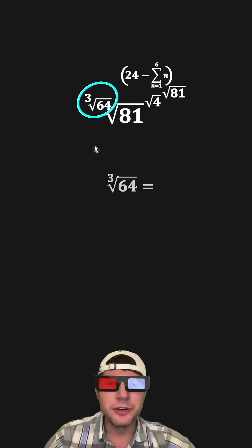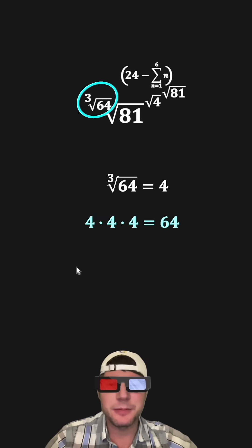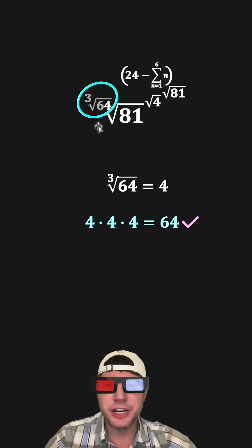Now we can do the cube root of 64. Cube root of 64 is equal to 4, and that's because 4 times 4 times 4 is 64. So this whole thing will change into 4.